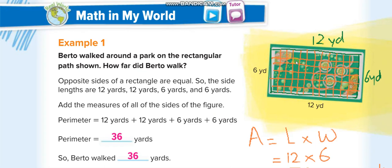Remember this: in a rectangle, the opposite sides are of equal length. If this side is 12, the opposite side is also 12. If this is 6, the opposite side is also 6 yards. So the distance around the figure — the boundaries — you add all of them to find the perimeter.